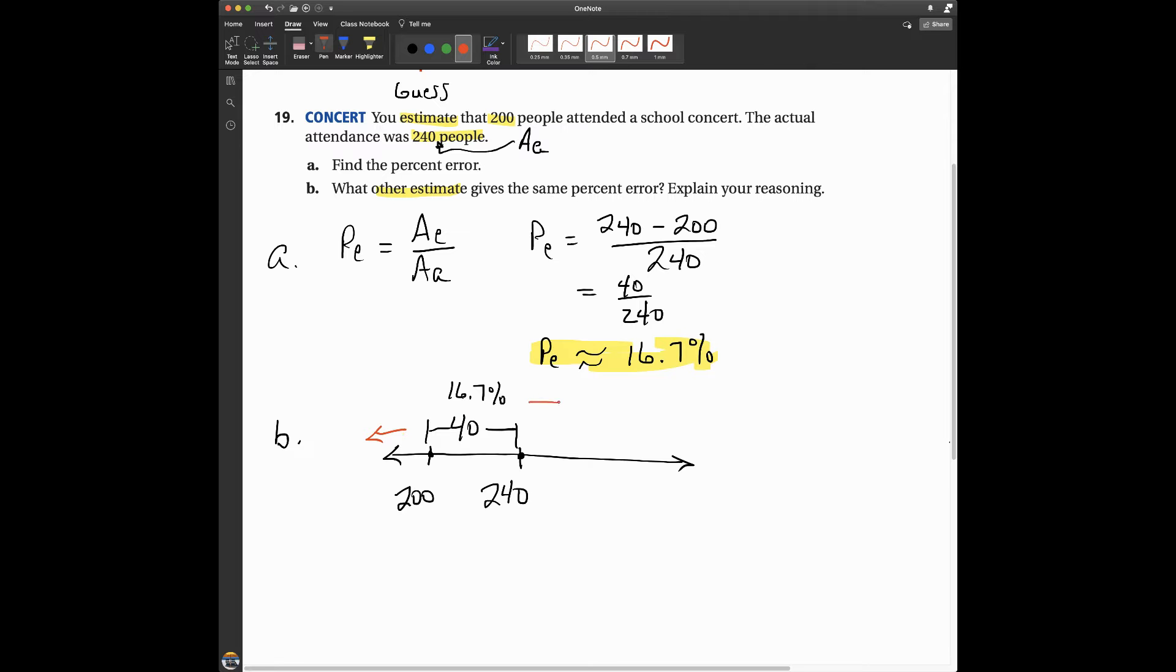What if I go to the right? Can I find another value? Well, if I guess 250 people, then remember my numerator is going to be 250 minus 240, which is 10. I need the numerator to be 40, so I know that I need to pick a number greater than 240.